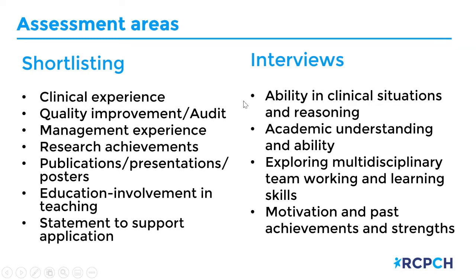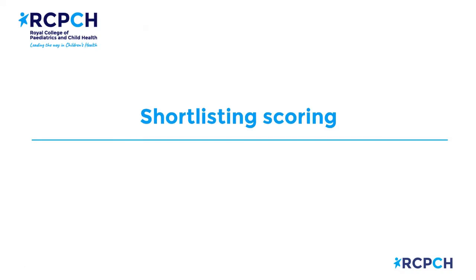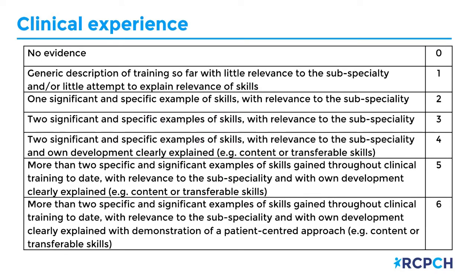All this information is available on the college website with a breakdown of scoring for each section. In clinical experience, we ask you to summarise the clinical experience you've had to date, including knowledge and skills that make you suitable for this subspecialty. If you don't put anything in this box you will get a zero. We give more marks for answers that are specific and draw on significant examples through your training that are relevant to the subspecialty, where you've clearly explained your developmental needs and transferable skills. This section is scored zero to six.